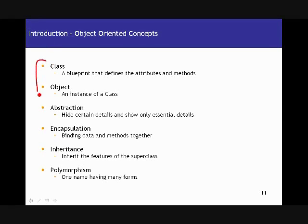The first two things — class and object — we've been discussing a lot, so I won't put much focus on those. Coming to abstraction: abstraction is nothing but hiding certain details and showing only the essential details. When we talk about modifiers and see how you apply the abstract modifier to classes and methods, you will see what it really means. In a particular class, you can hide certain details and only implement the essential details — that's abstraction.